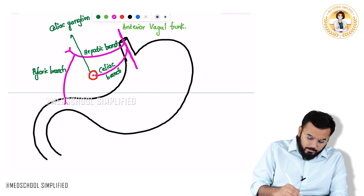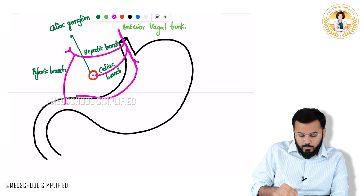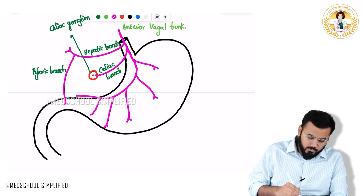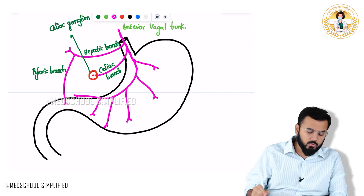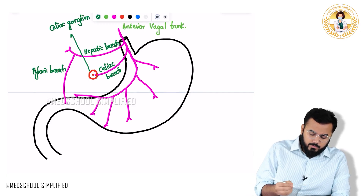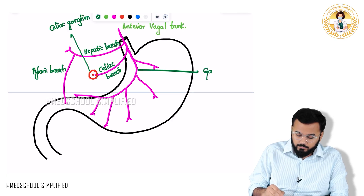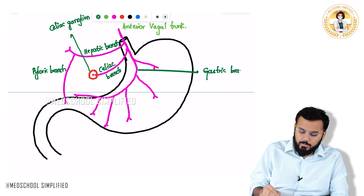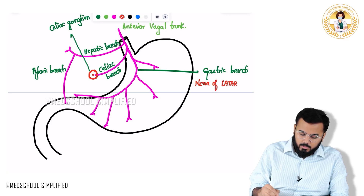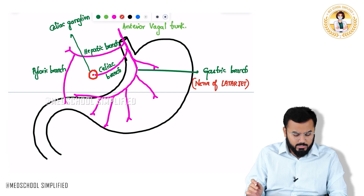There is another branch coming all the way down, supplying most of the regions of the stomach. This branch is called the gastric branch, or the nerve of Latarjet.